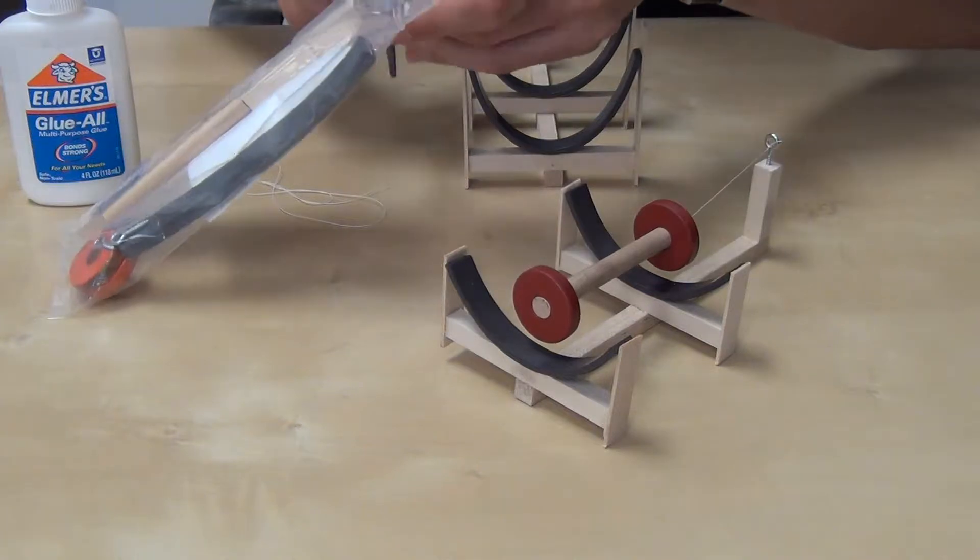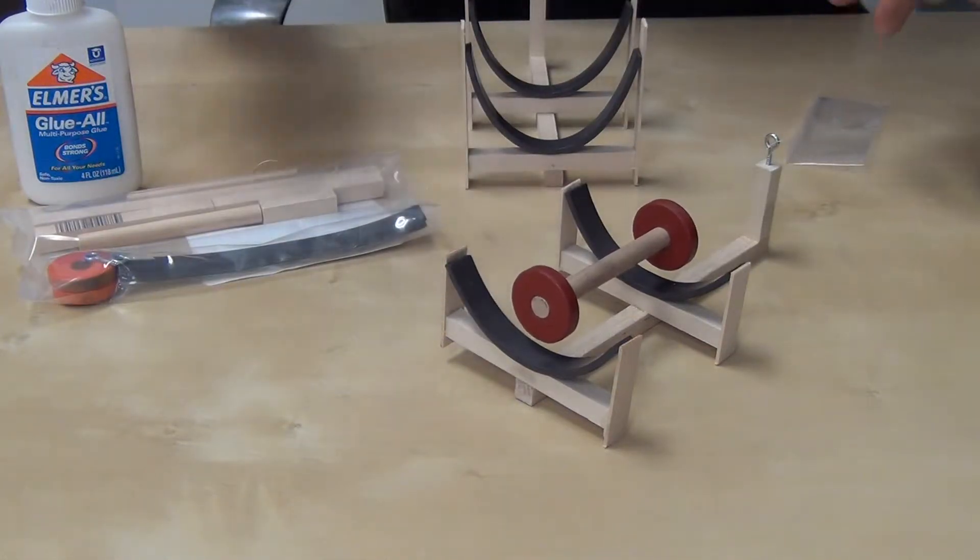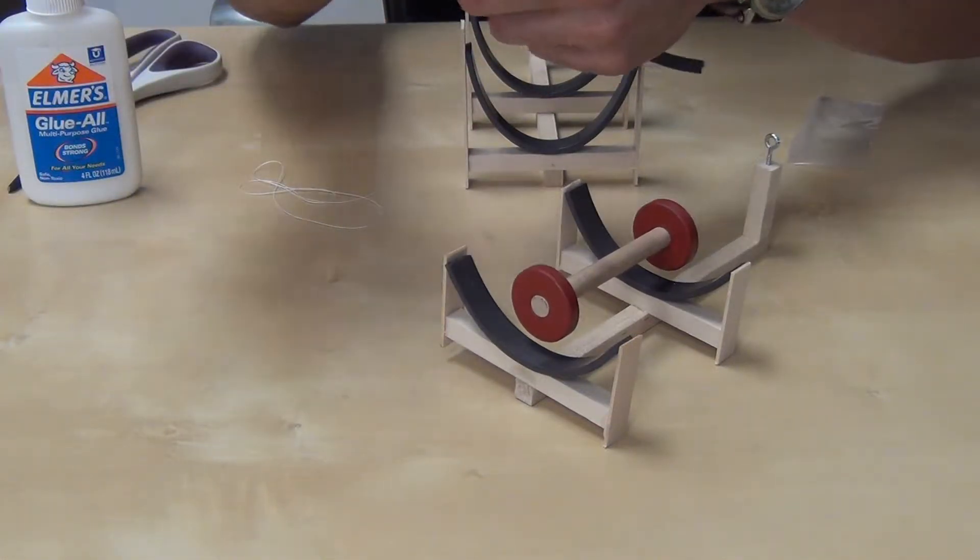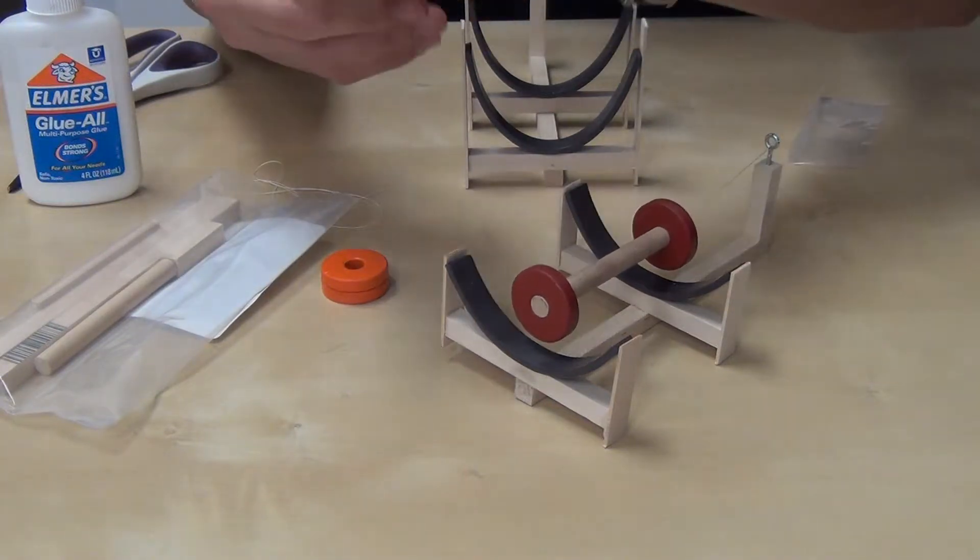So let's open this new package up. As you can see, the ring magnets are different colors. Each kit varies. Here we have orange. So let's lay out the parts here.